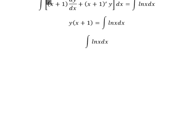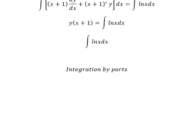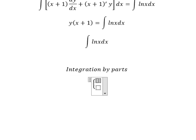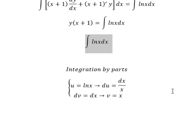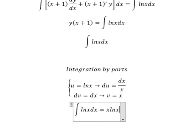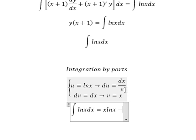We need to use integration by parts for the remaining term. So we set u equal to ln(s), then du equals ds over s. We set dv equals ds, so v equals s. We then have u multiplied by v, giving us s·ln(s).